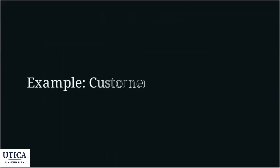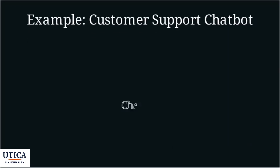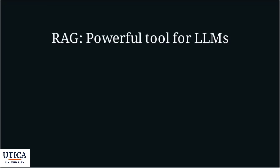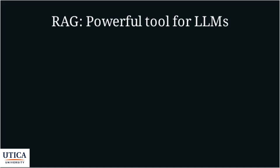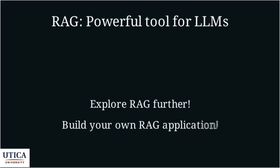Let's look at a real-world example — a customer support chatbot. A customer asks a question, and the chatbot uses a RAG pipeline to retrieve relevant information from a company's knowledge base, such as FAQs and product manuals. The chatbot then uses this information to provide a helpful and accurate answer. Retrieval Augmented Generation is a powerful technique for improving the accuracy and reliability of large language models. We encourage you to explore RAG further and even build your own RAG applications. Thanks for watching.